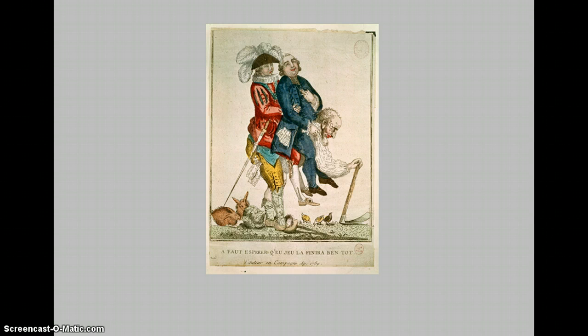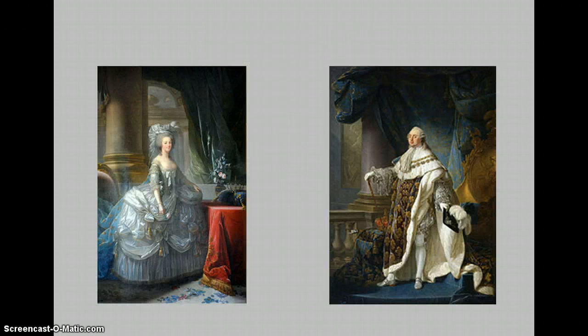Outdated farming methods during this time also created food shortages. And even though the peasants were facing food shortages, King Louis and his Queen Marie Antoinette lived in opulence. The palaces were very extravagant and nothing seemed to affect them. This is then pictured right here.